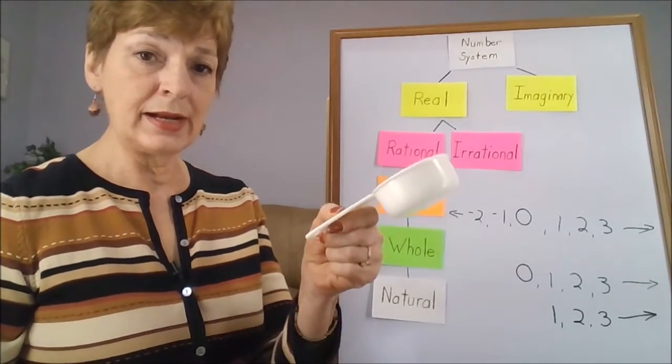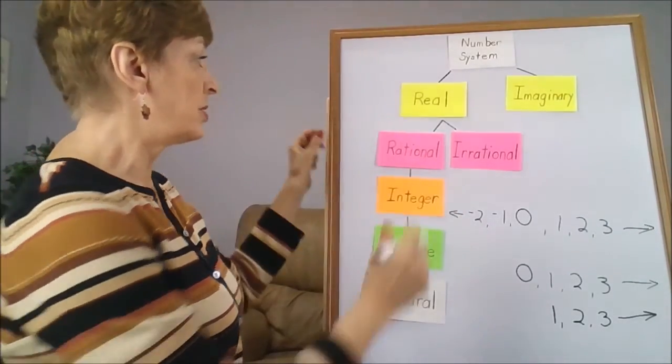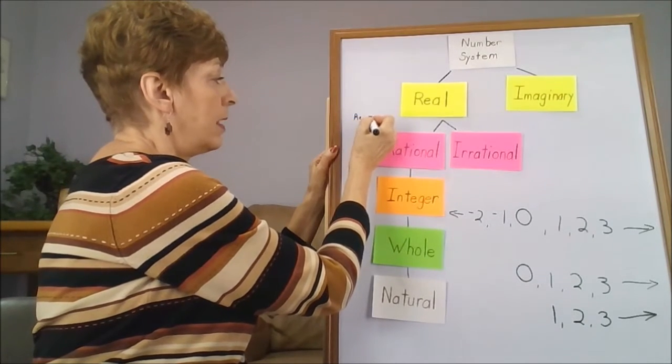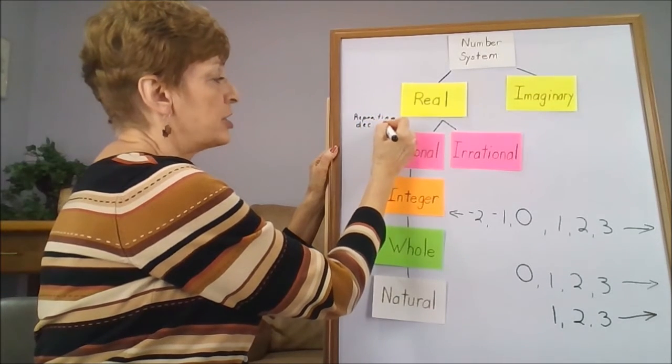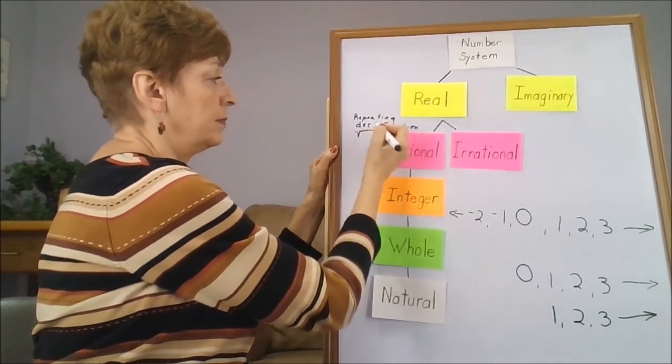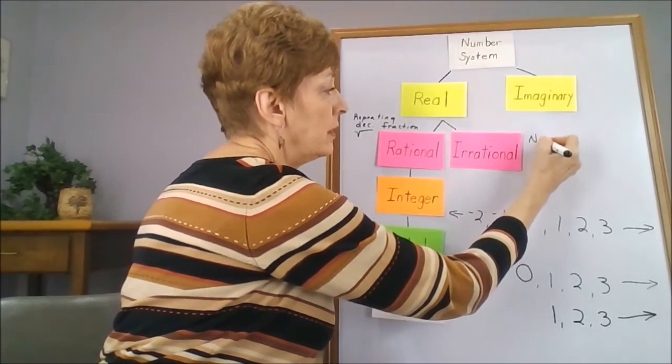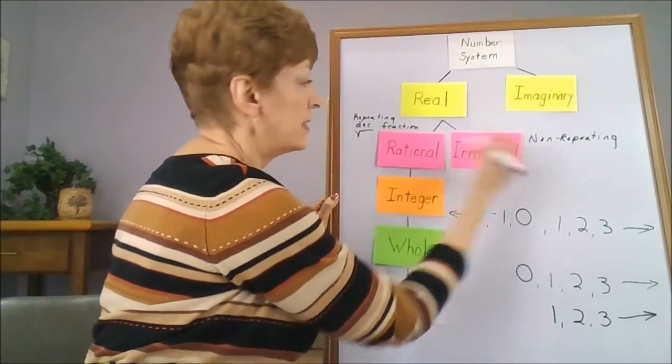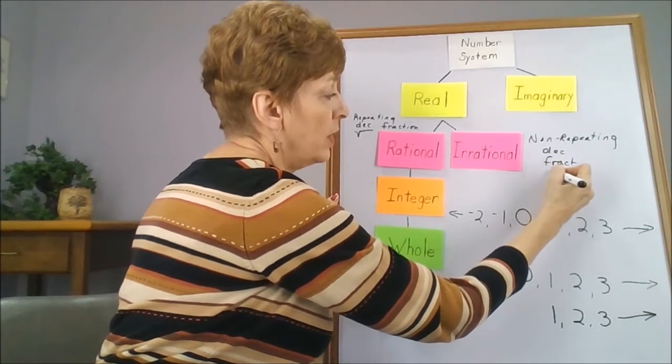In the next category, we've got two branches. The rational numbers are repeating decimals, fractions, and square roots. Irrational numbers are non-repeating decimals, fractions, and square roots.